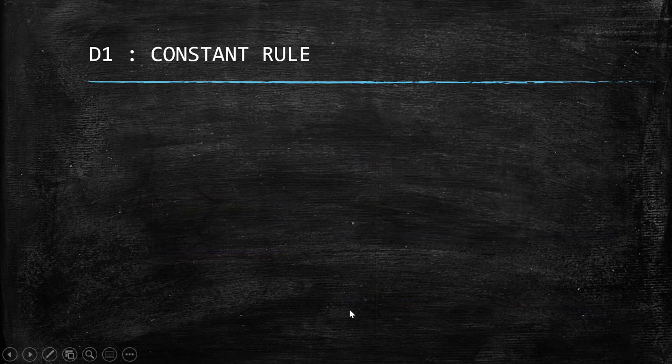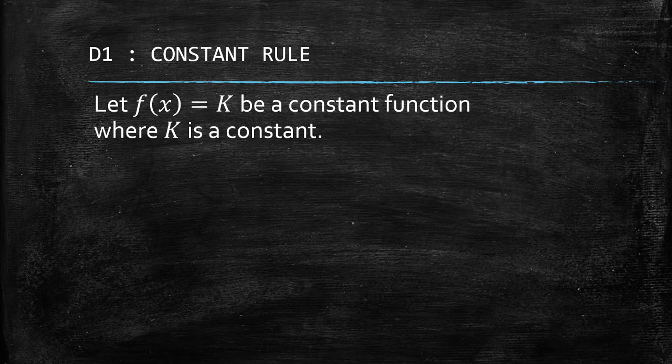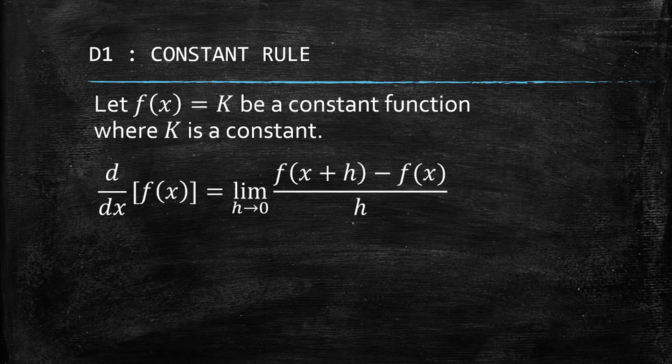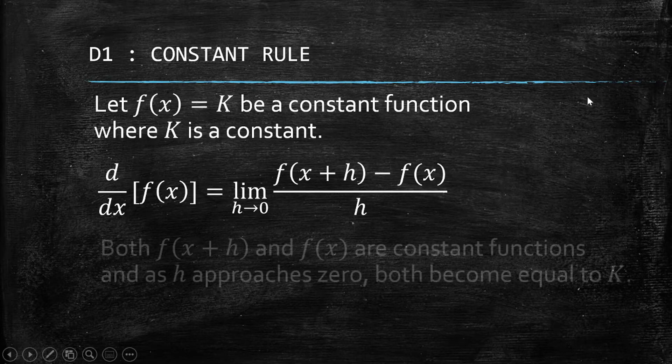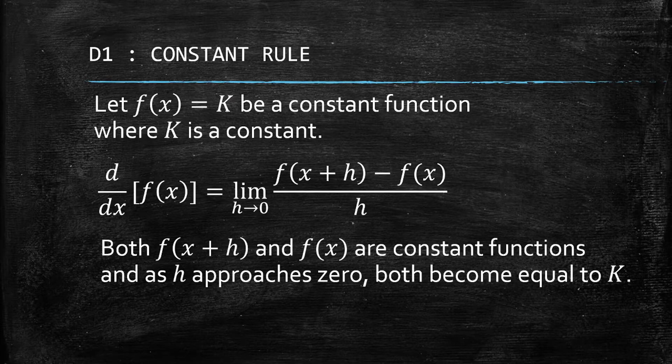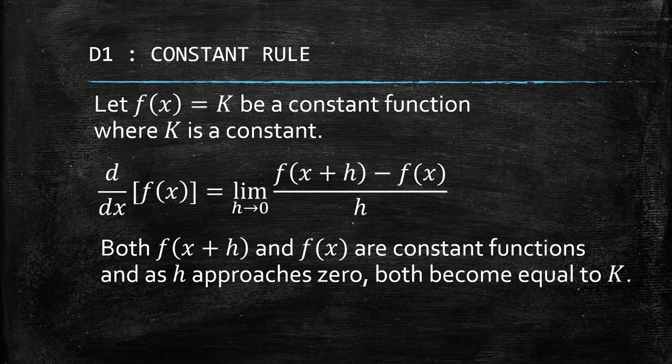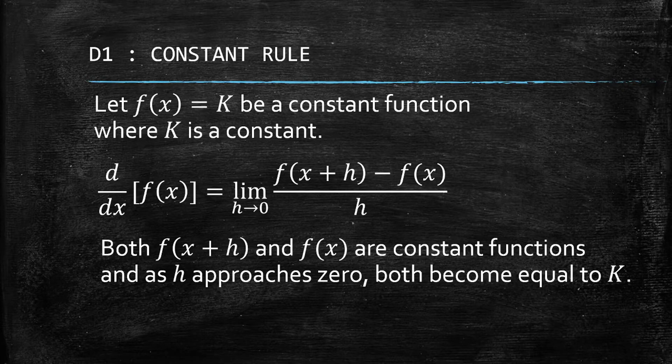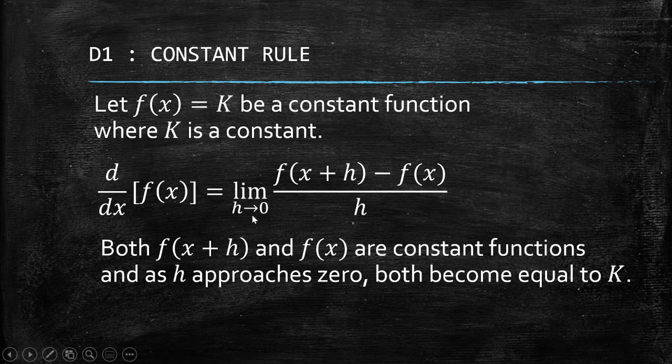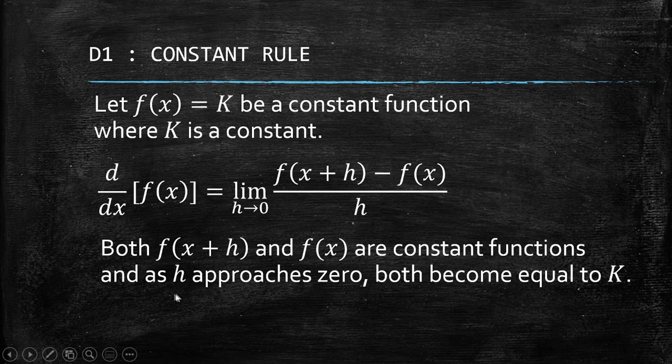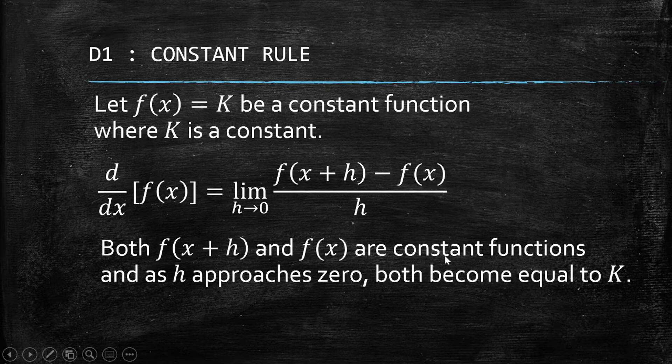Let's try to prove why this is true. If you have a constant function, we can use the definition of the derivative of a function. Suppose that f(x) is a constant function. This would imply that f(x + h) and f(x) are also constant functions, because h is just a number approaching zero.